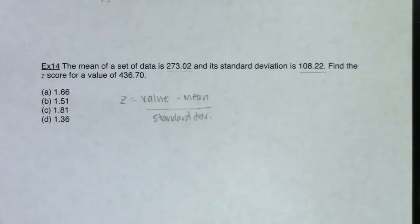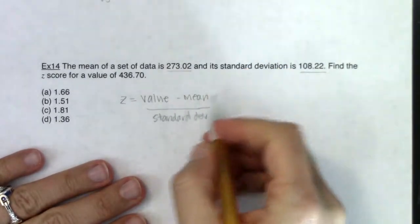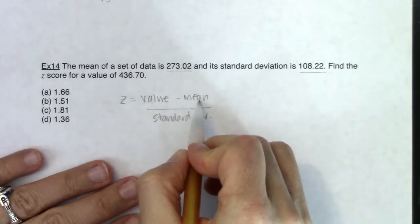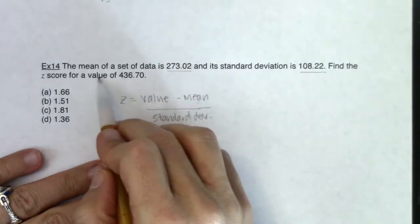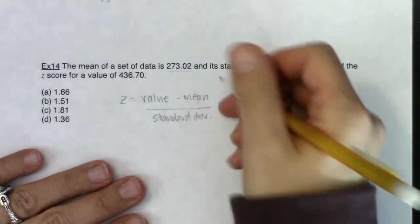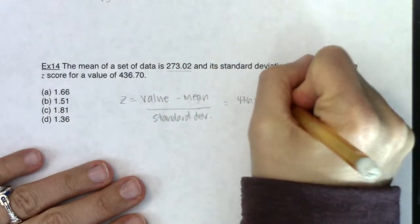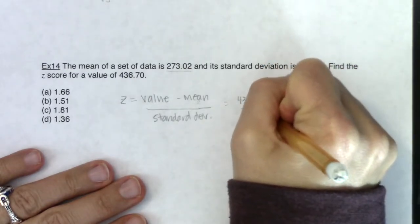And again, z-scores are going to come back up in chapter six when we really take a look at normal distributions, specifically the standard normal distribution for z-scores. All right, but all we have to do is figure out where these three numbers are. So it says right here, the mean was 273. I'll put that in for a mean. It says the standard deviation was 108.22. I'll put that in in the denominator, and we've got the value of 436.7. So we will go 436.70. I will subtract out the mean of 273.02, and I will divide by 108.22.